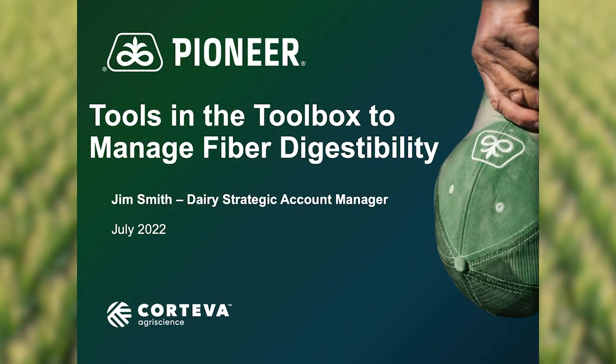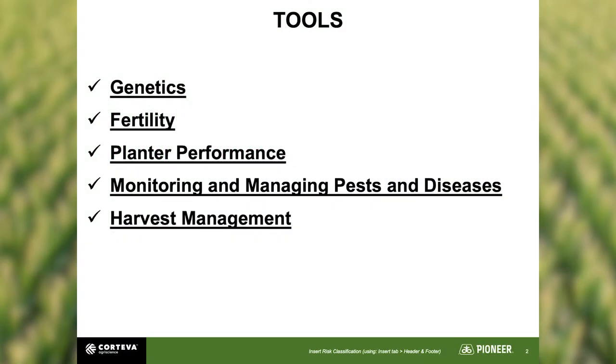Hi and welcome back to the Silage Zone. I'm excited today to share with you some of the things that we have in our toolkit to manage fiber digestibility in the two major crops that we deal with on dairies, alfalfa and corn. The five areas that I'm going to cover briefly are genetics, fertility, planter performance, monitoring and managing pests and diseases, and then harvest management.